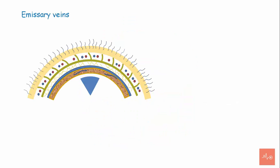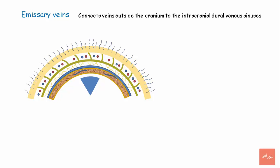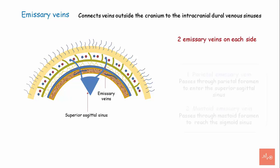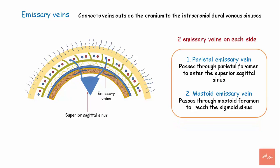Emissary veins connect the veins outside the cranium to the intracranial dural venous sinuses. There are two emissary veins on each side. The parietal emissary vein passes through the parietal foramen to enter the superior sagittal sinus. The mastoid emissary vein passes through the mastoid foramen to reach the sigmoid sinus. These emissary veins can carry infection from the outer scalp to the intracranial dural venous sinuses.